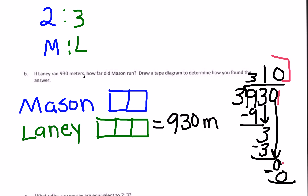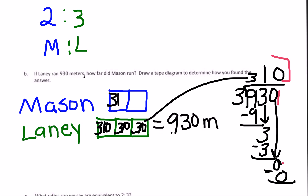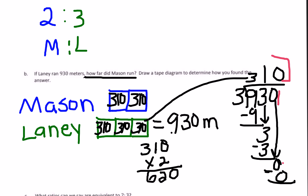That being the case, I take this 310 and put it inside each one of the boxes: 310, 310, 310. If I put all 310s together — either multiplying 310 by 3 or adding them up — I'll get 930. The rule is, if 310 is in all of Lani's boxes, then 310 has to go in Mason's boxes as well. So to find out how far Mason ran, we simply do 310 times 2, or 310 plus 310. I get 620. Therefore, Mason ran 620 meters.